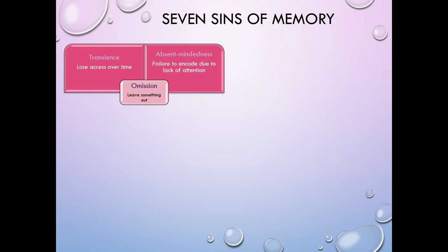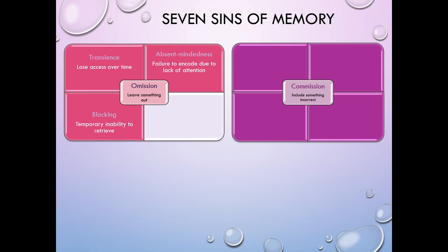Absent-mindedness would be another sin of omission, where we fail to encode information due to a lack of attention to the information. If you recall back in our discussion about transferring information from short-term memory to long-term memory, encoding requires attention. And so if we fail to pay attention, we will fail to encode. And then the last sin of omission would be blocking, which is a temporary inability to retrieve the information. It's in there, it should be retrievable, but something right now is preventing us from retrieving that information.